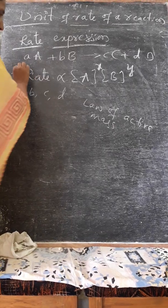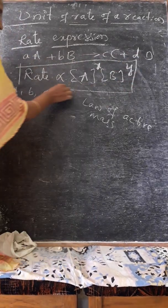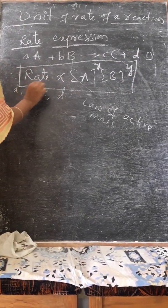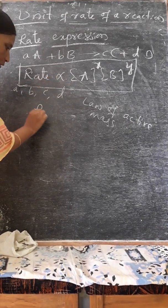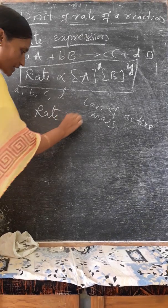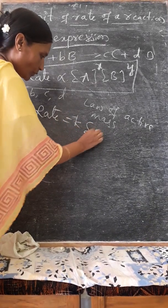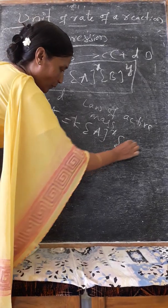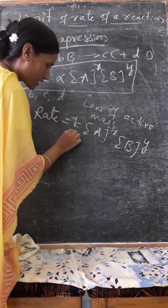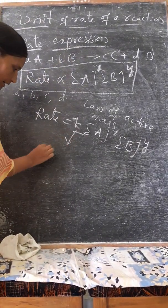So this rate expression is said to be rate law expression. Removing the proportionality constant, rate is equal to K times A to the power X times B to the power Y, where K is called the rate constant.